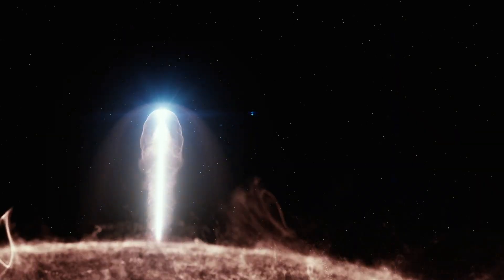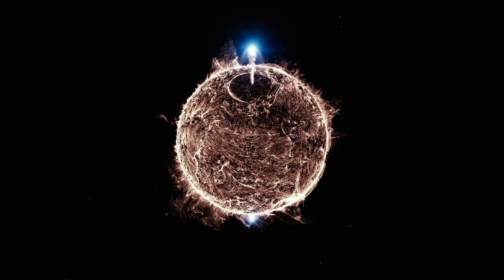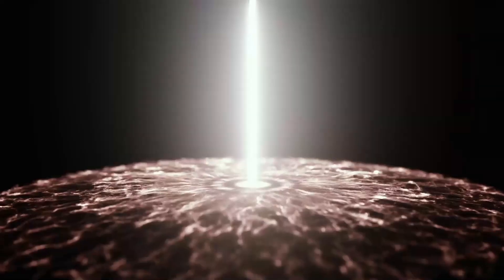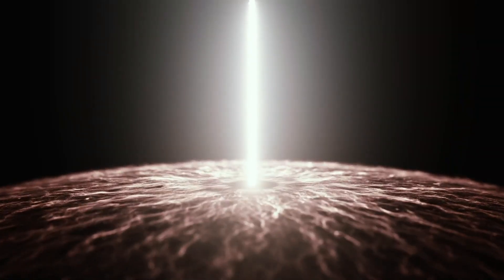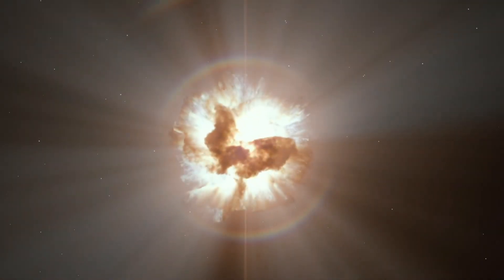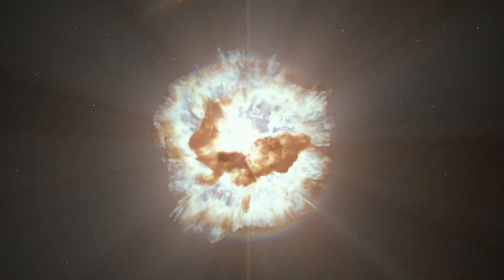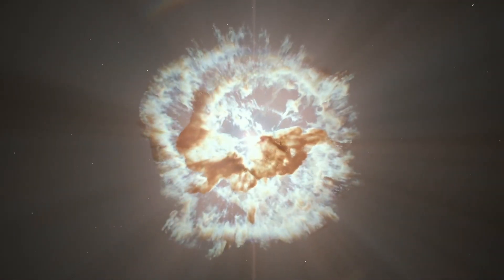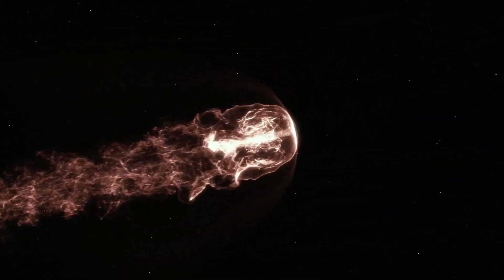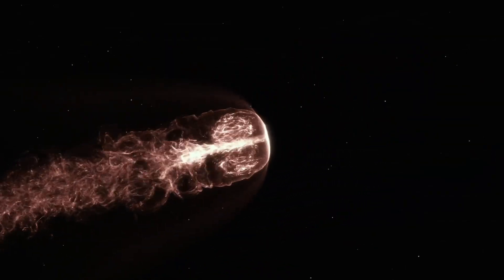Localized Effects of GRB 080319B, Assessing Potential Consequences. While the direct impact of GRB 080319B on Earth was minimal due to its distance, it is worth considering the potential localized effects that such a burst could have if a similar event occurred closer to our galactic neighborhood. We will explore the possible localized consequences of GRB 080319B and similar bursts, focusing on factors such as radiation damage, atmospheric ionization, and disruptions to ecosystems.